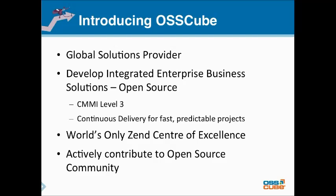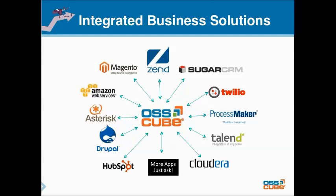We are a world-leading center of excellence and we actively contribute to the open source community. We are an integrated business solution provider with a broad set of competencies. Our greatest strength, what separates us from other open source solution providers, is the ability to integrate many applications into a solution that helps meet customer business objectives — including Talend, Cloudera, Sugar CRM, and Magento. We are the Talend-only partner in India and Asia Pacific, and an Amazon advanced consulting partner.